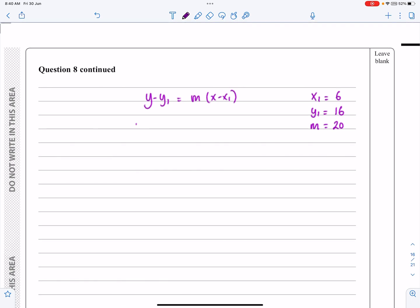So chuck everything in. y minus 16 equals 20(x - 6), pretty straightforward, and I've been reminded as I'm going through that bit, yeah, they want it in the form y equals mx plus c.